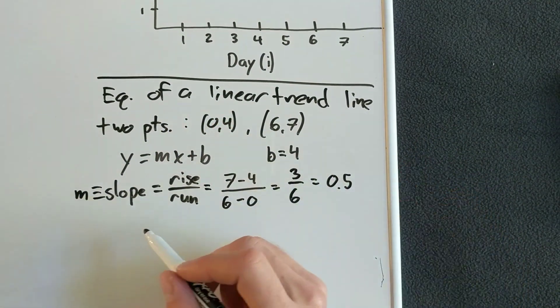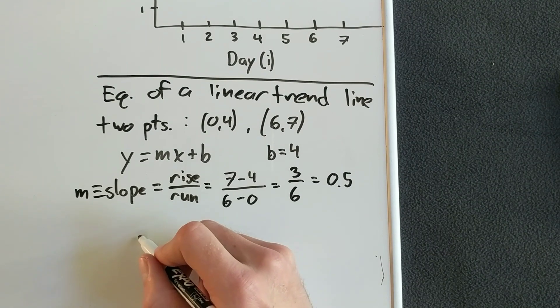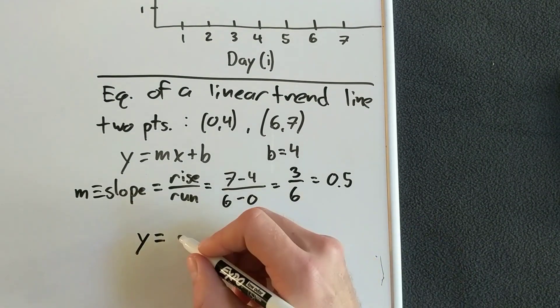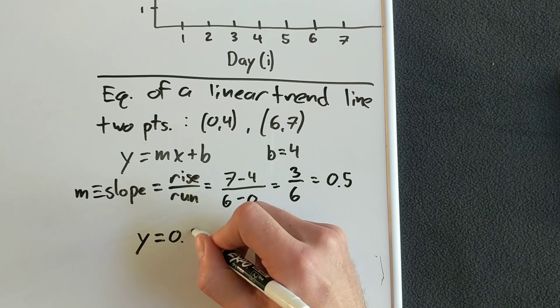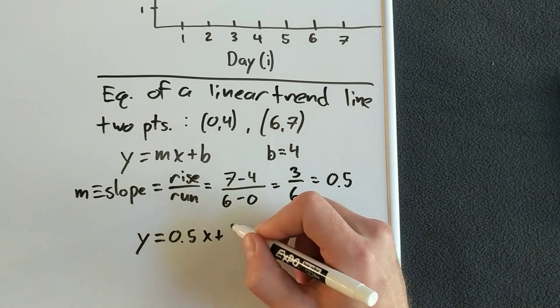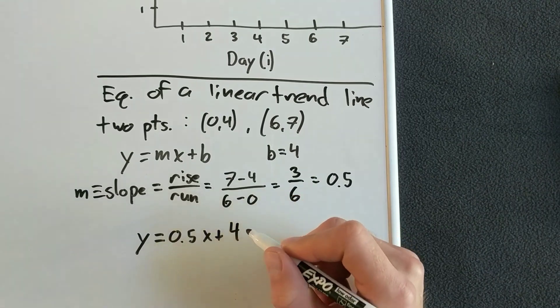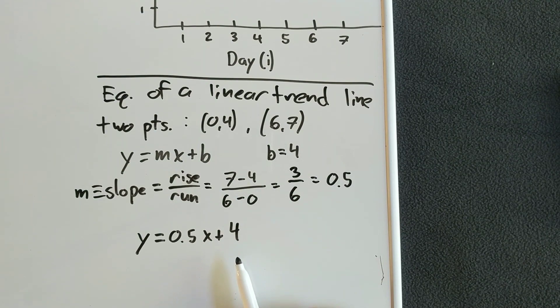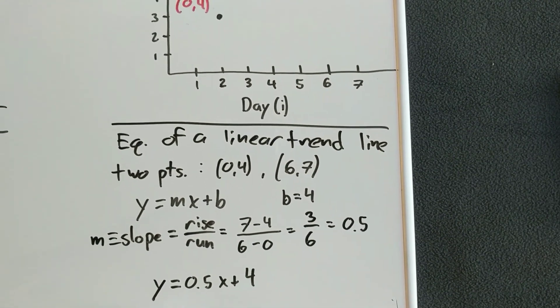And now our equation for this trend line is y equals 0.5 times x plus four. So that was finding the equation of a linear trend line.